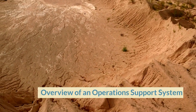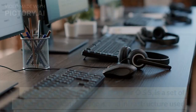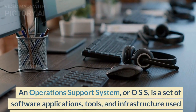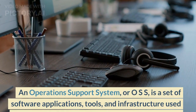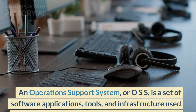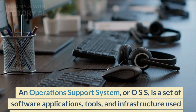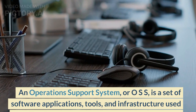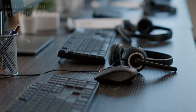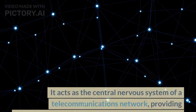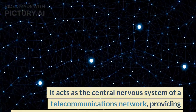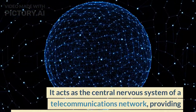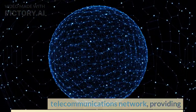Overview of an operations support system. An operations support system, or OSS, is a set of software applications, tools, and infrastructure used by telecommunications service providers to monitor, manage, and maintain their networks. It acts as the central nervous system of a telecommunications network, providing functionalities that streamline network operations.